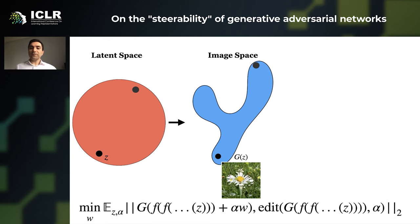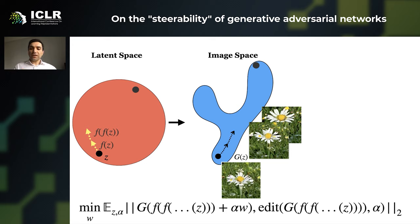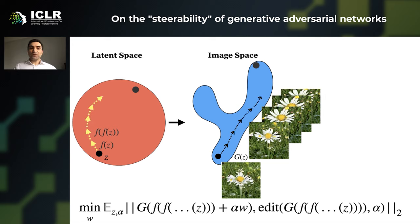Alternatively, we can think about a nonlinear function that approximates W. Here we can do something similar to the Euler method, where we take small steps and recursively apply them until we reach the desired transformation.